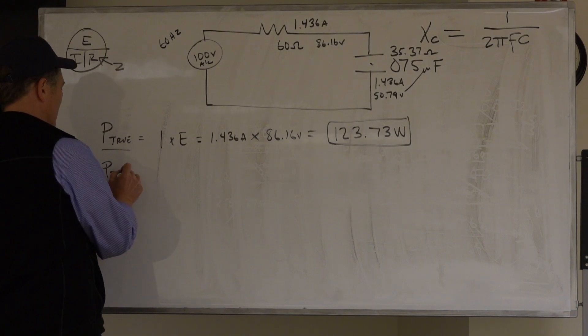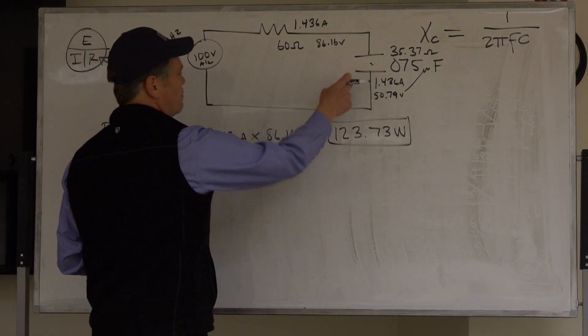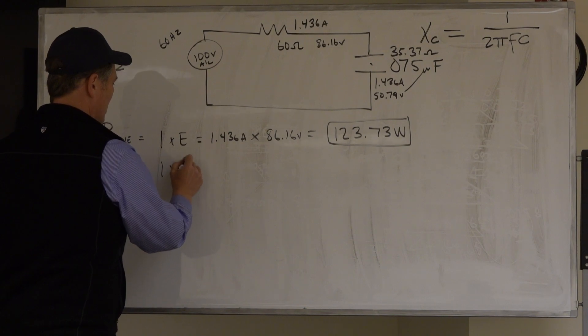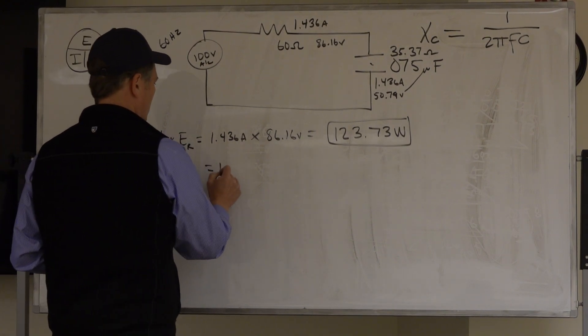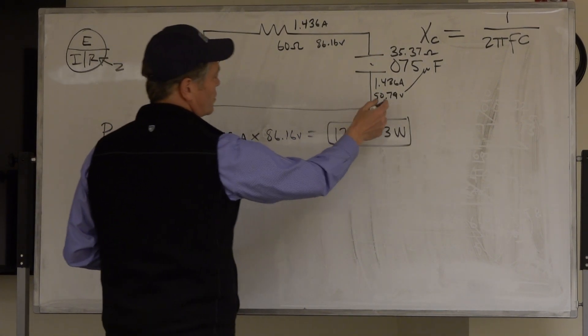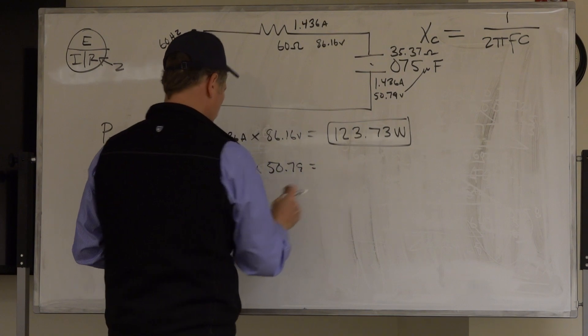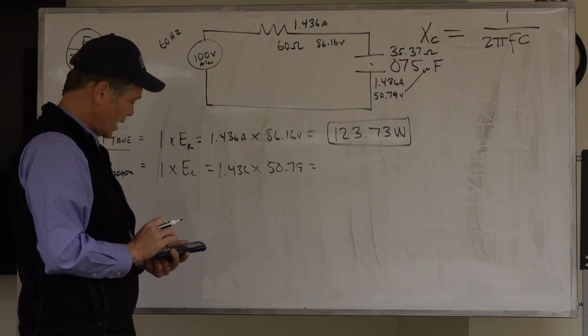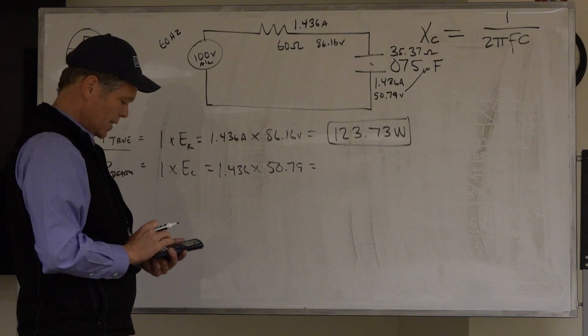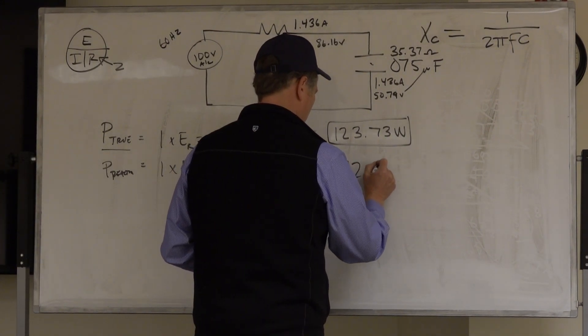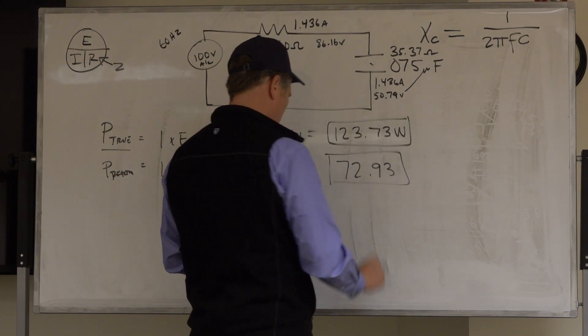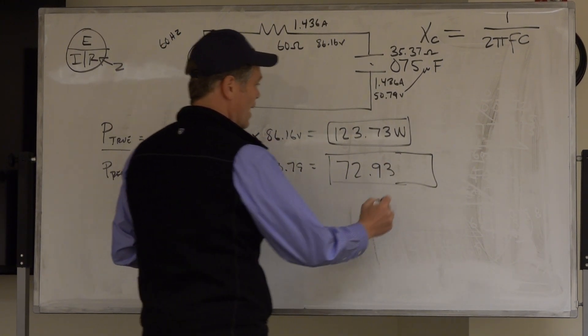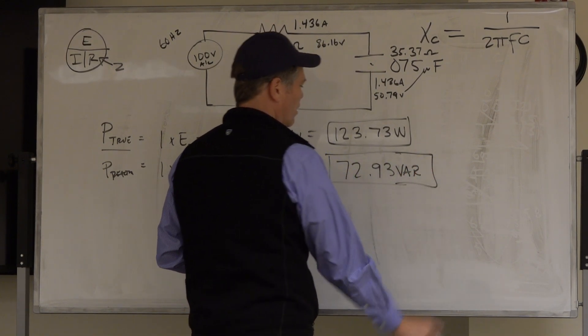I'm going to say P-reactive. Now, I only have one reactive element in this circuit. It's the capacitor. So I'm going to use that. My I is my current everywhere, series circuit. And my E is my E at the capacitor. So that's going to equal 1.436 times, what did I say my voltage was? 50.79. Clear, clear, clear. 1.436 times 50.79. That equals 72.93. And I can round it to 72.93. I can drop off the next digit because it's smaller than 5. But again, what's my unit here? Well, it's reactive power, so it's VARs. VAR or VARs, doesn't matter.